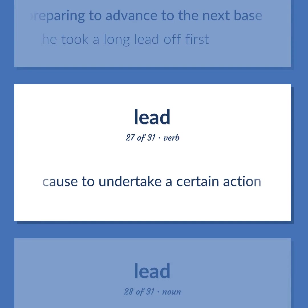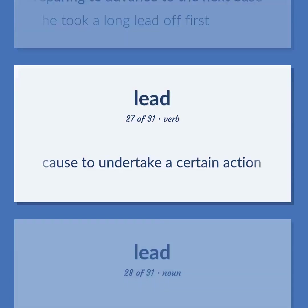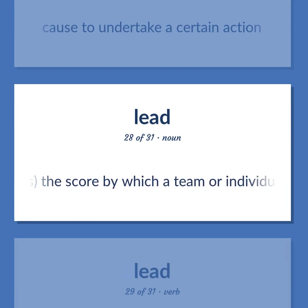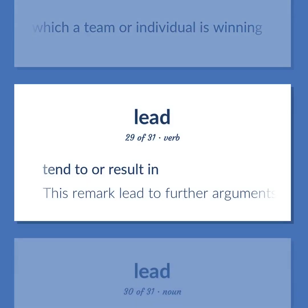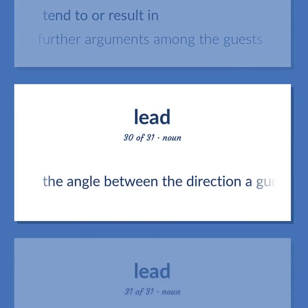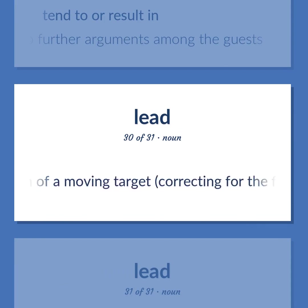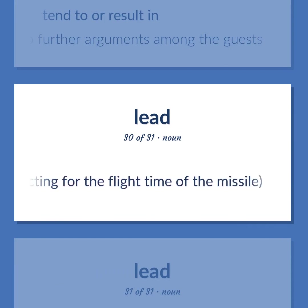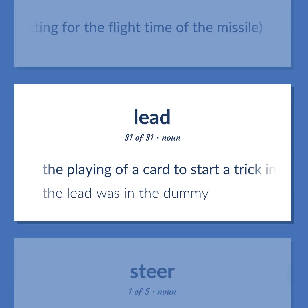Cause to undertake a certain action. Sports: the score by which a team or individual is winning. Lead to a result in — this remark led to further arguments among the guests. The angle between the direction a gun is aimed and the position of a moving target, correcting for the flight time of the missile. The playing of a card to start a trick in bridge — the lead was in the dummy.